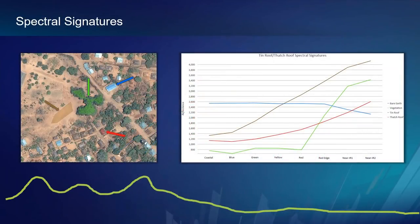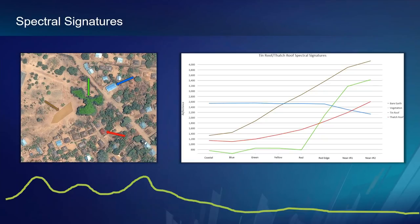Foundational to remote sensing is this idea that different objects on the Earth reflect energy in different ways — this is the concept of spectral signatures. Much like our own signatures can identify who created them, we can do the same with spectral signatures. Here we have an example looking at bare Earth, vegetation, tin roof, and thatch roof. On the X axis we can see different frequencies of the electromagnetic spectrum — blue and green to the left, red and near infrared to the right. We can see differences in spectral signatures across these different frequencies. For example, a tin roof reflects energy very differently than bare Earth or a thatch roof. We'll dig into this example a little bit later.